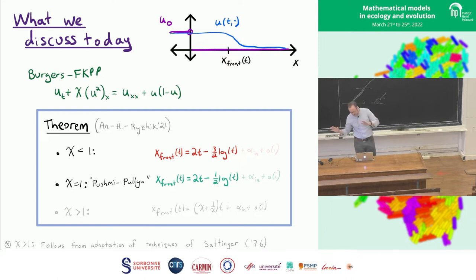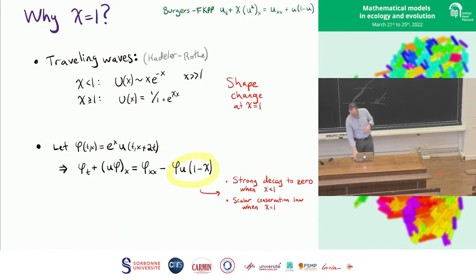Part of the reason for this is that a lot of the arguments for the lower terms and convergence of the wave are similar to work from Jean-Michel Roquejoffre, Jim Nolen, and Len Ryzhik. So that's not the sort of exciting thing that I want to tell you about. For chi bigger than one, the reason I don't want to talk about it, actually it's fairly straightforward using techniques going back to Sattinger in the 70s. So you're really using kind of known, understood things.